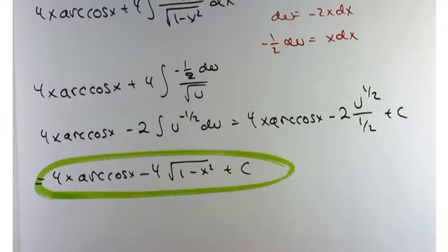4X arc cosine of X minus 2 times U to the positive 1 half divided by positive 1 half plus a constant. Divided by 1 half is the same thing as multiplying by 2. So it's 4X arc cosine of X minus 4 times the square root of 1 minus X squared plus your constant.